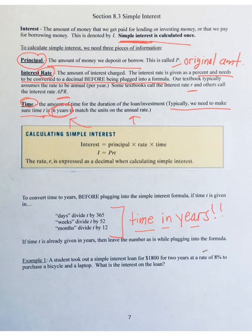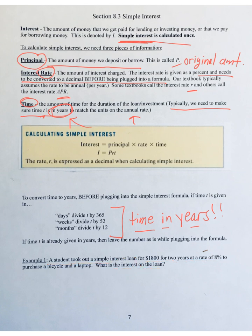Let's see this formula in action. Looking at Example 1 at the bottom of the screen: a student took out a simple interest loan for $1,800 for two years at a rate of 8% to purchase a bicycle and a laptop. The question asks: what is the interest on the loan? They're not asking for the full amount the student has to pay back — just the interest they're going to be charged for borrowing the money in the first place.